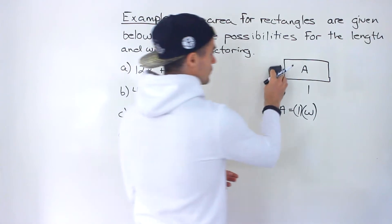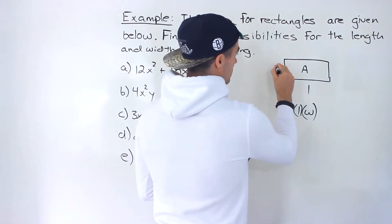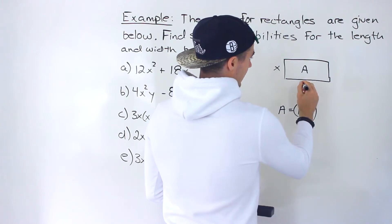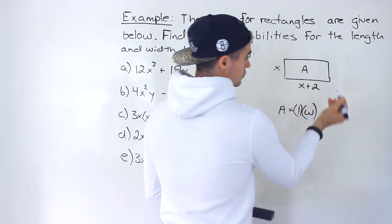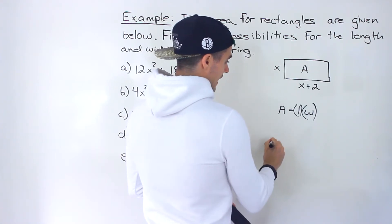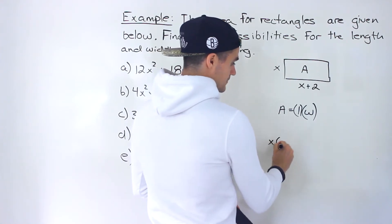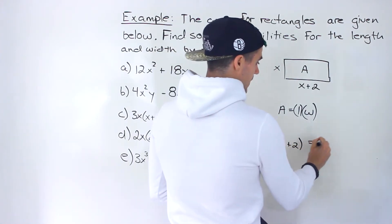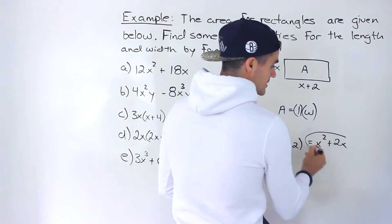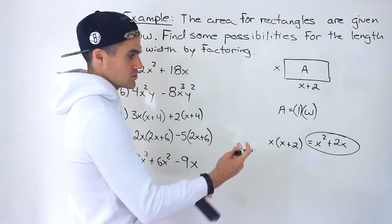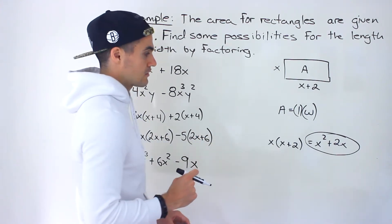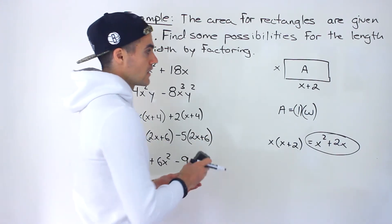For example, if we let the width be x and the length be x plus 2, the area would be x times (x+2), which if we expand gives us x squared plus 2x. So when given an area expression like this, we factor it to get possibilities for the length and width.